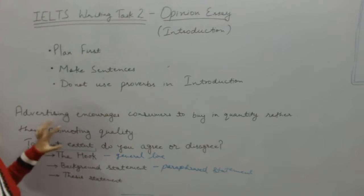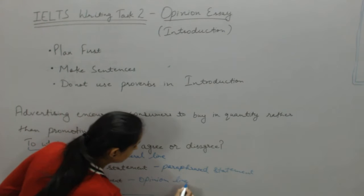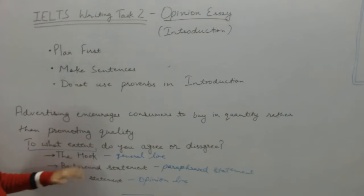The next is the thesis statement. It is your opinion — you can call it the opinion line. That is where you state whether you agree or disagree with the statement, and to what extent, meaning how much you agree to the statement.